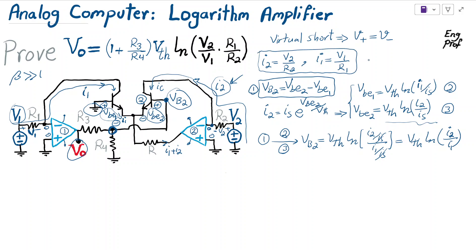Now I can use the result obtained earlier. Using equation 4 in combination with the previous equation, I substitute for i2 and i1. VB2 equals V threshold ln, where i2 is V2 over R2 and i1 is V1 over R1. Therefore, VB2 equals V threshold ln of V2 over V1 times R1 over R2.